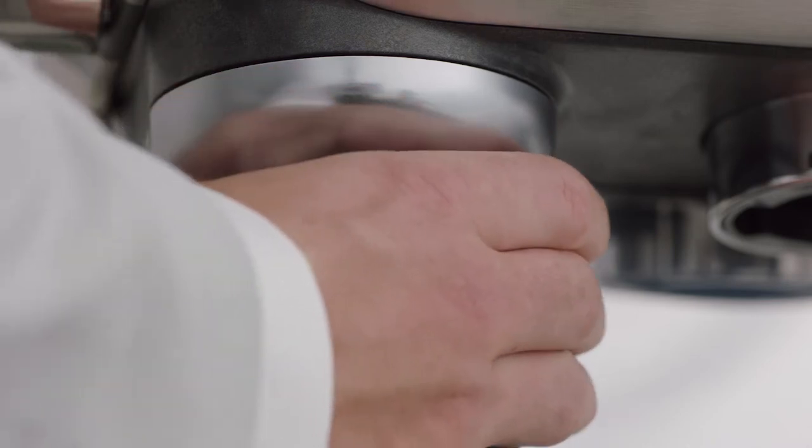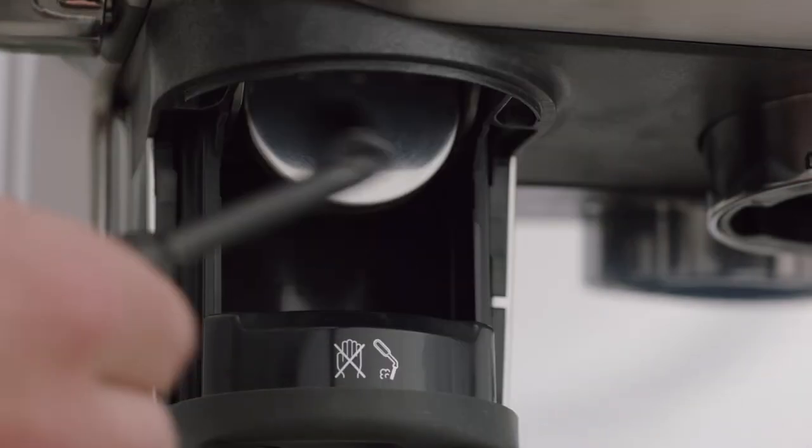Remove the tamp cover to clean the grind outlet with the cleaning brush before placing the cover back into position.